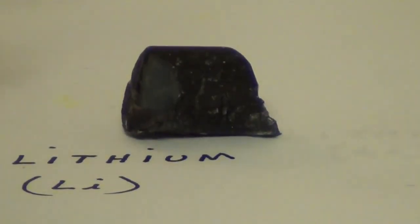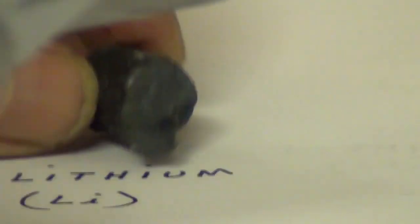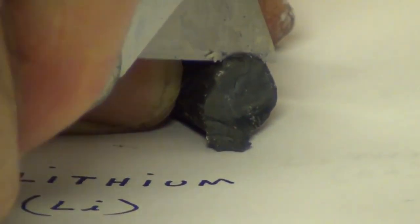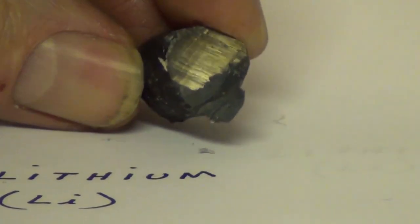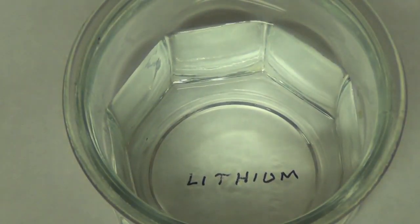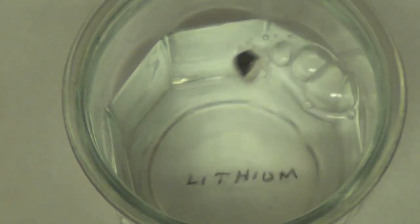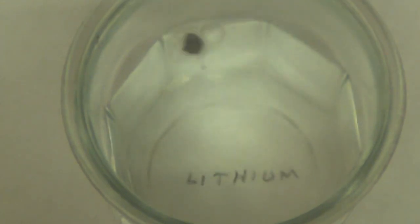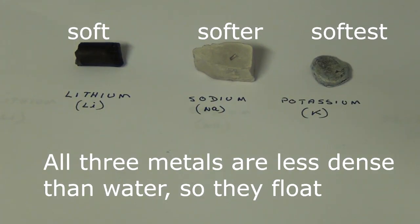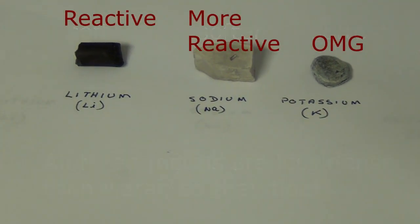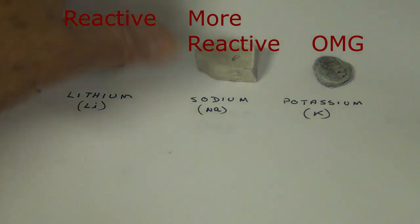A third metal called lithium, which wasn't isolated until 1817 by a man named Berzelius, was also discovered to be similar to both sodium and potassium. It's soft, but not as soft as potassium or sodium, and it also reacts with water, although it does take longer to completely react than either sodium or potassium. When we compare the three metals, we find that they all float in water. Lithium is softer than most metals, but sodium is much softer, and potassium is even softer. And when we compare reactivities, lithium is very reactive in water, but sodium is more reactive, and potassium is even more reactive.